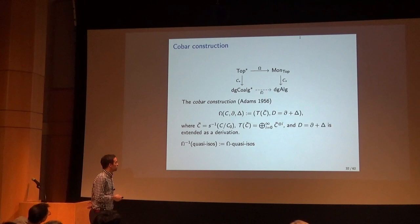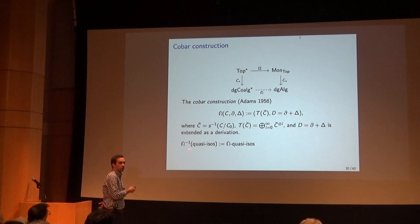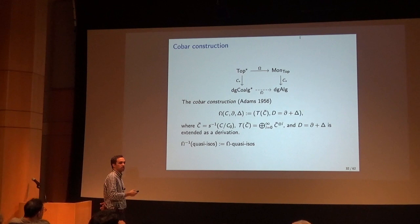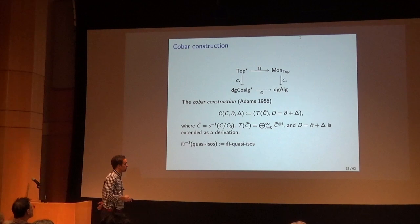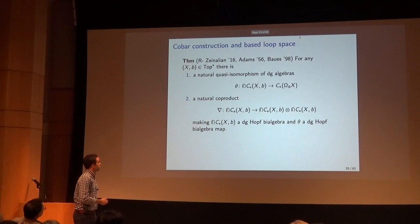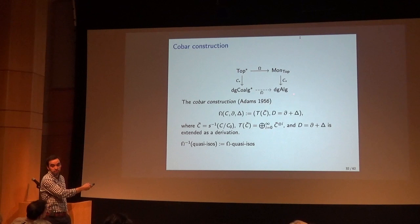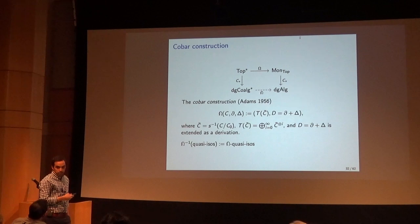I will use this construction to define a notion of equivalence on co-algebras by pulling back quasi-isomorphisms of algebras through this functor. Namely, a map of co-algebras will be called a cobar quasi-isomorphism if it induces a quasi-isomorphism of algebras after applying the cobar construction. This is meaningful because the cobar construction does not preserve quasi-isomorphisms in general. I'm considering the chains on the topological monoid as a differential graded algebra, forgetting the bi-algebra structure for the moment.